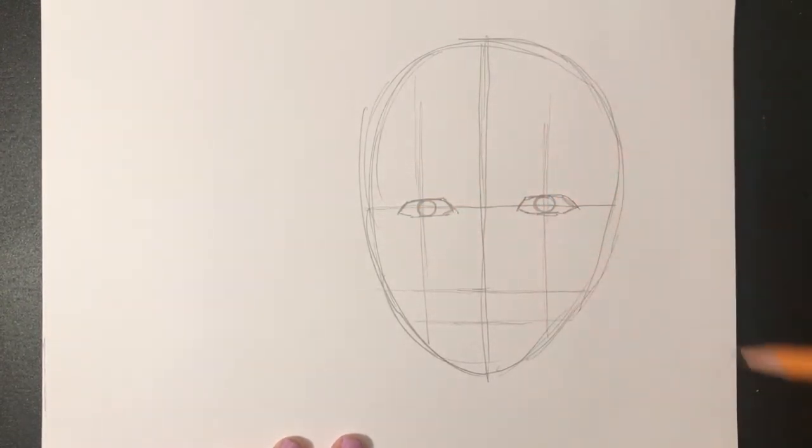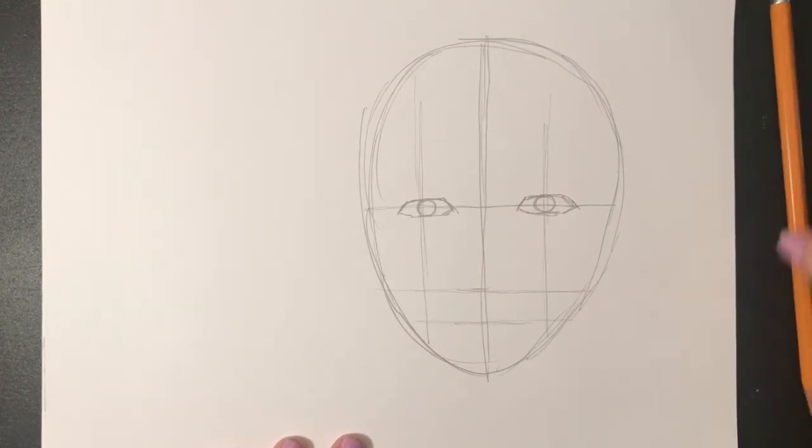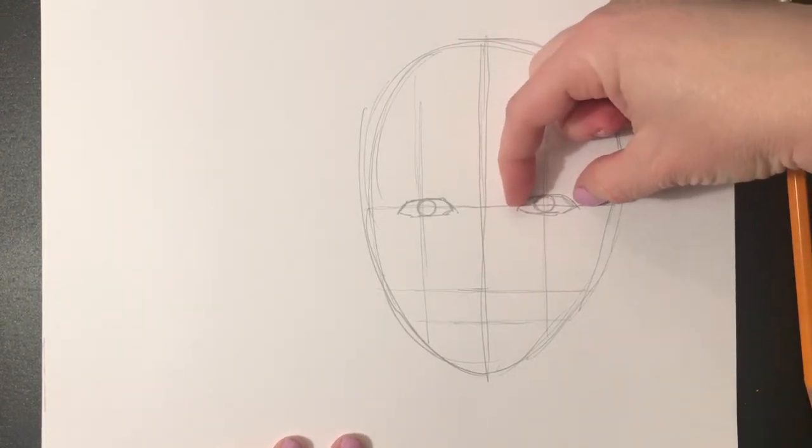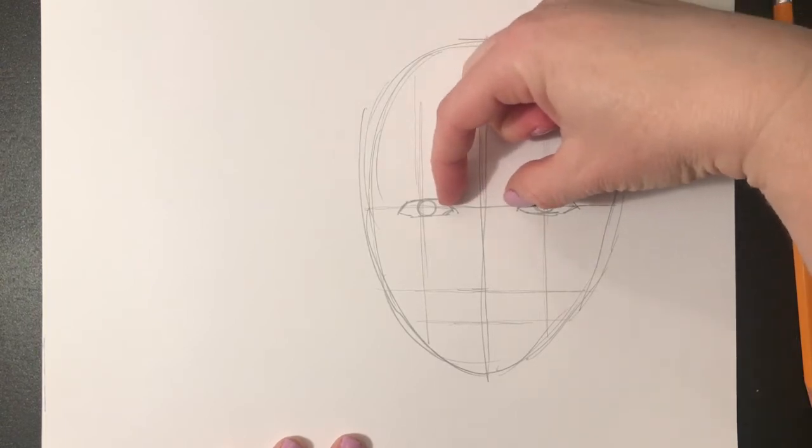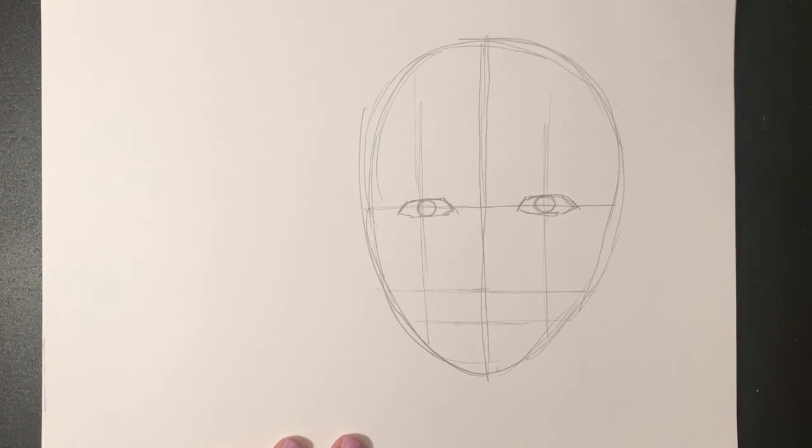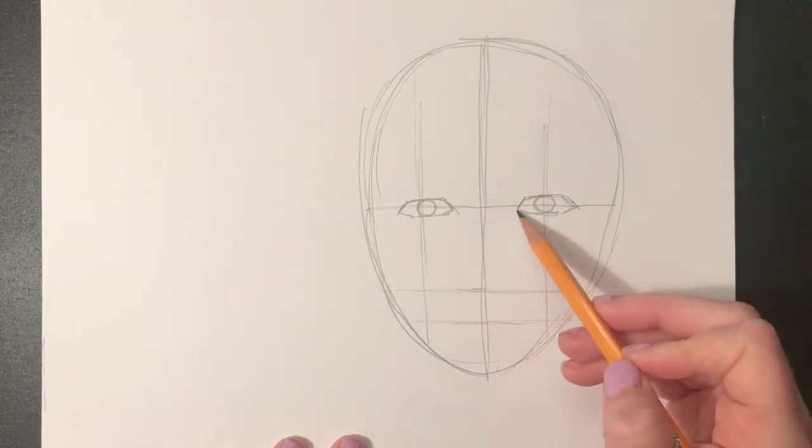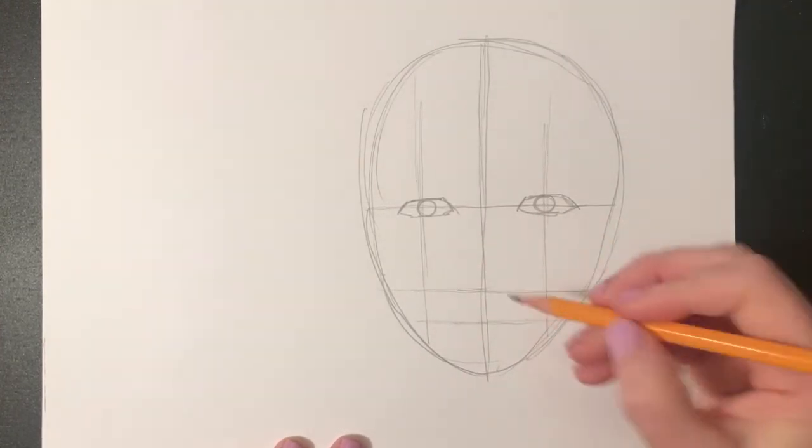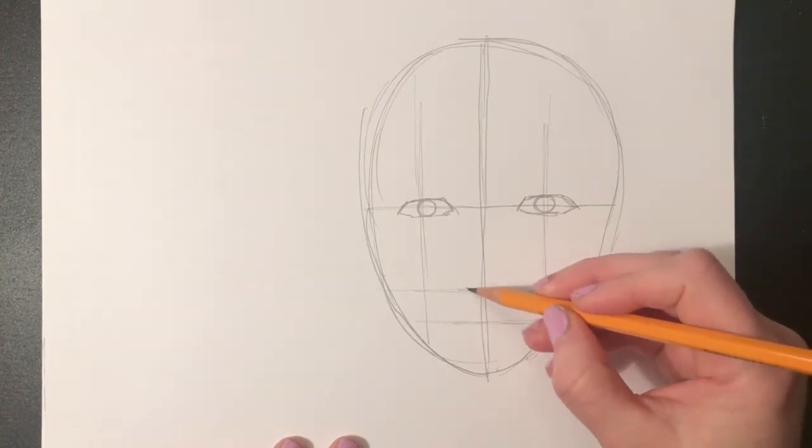To help you get the size of the eyes right and the spacing right, imagine that you have the width of one eye and see if you could fit that same amount of space between the two eyes. That is gonna be about right. So if there's enough room for one eye of the same size between the two eyes, your eyes are probably the right size and spaced apart the right way.